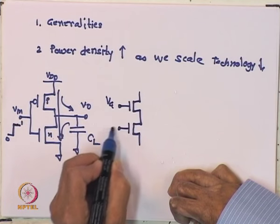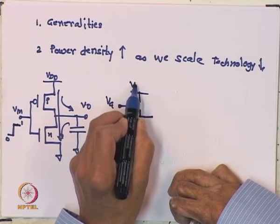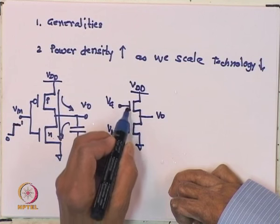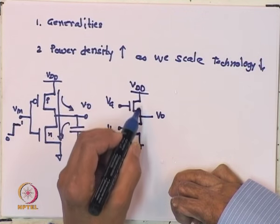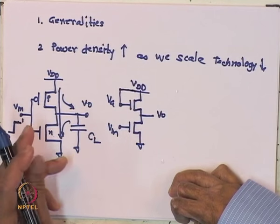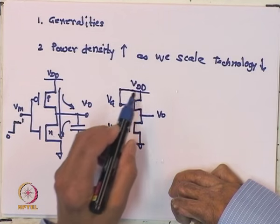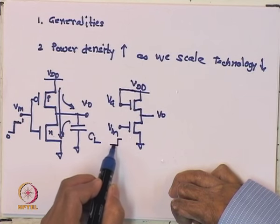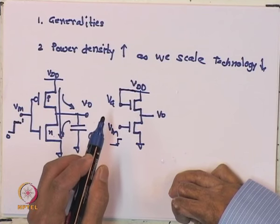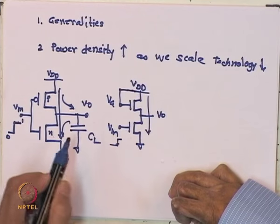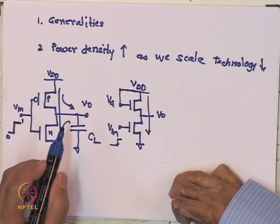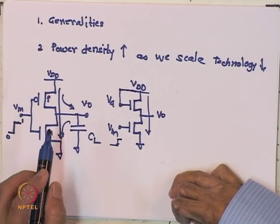In an NMOS inverter, VG can be larger than VT of the N-channel transistor so it turns on. If the N-channel load is always in saturation, this NMOS inverter will have a constant current flowing for all cases except when VIN is slightly lower than VT, when both devices are off. For all other cases, a constant static current flows, called static current in NMOS circuits. However, in CMOS this situation does not occur, and therefore CMOS circuits are low power circuits compared to NMOS circuits.